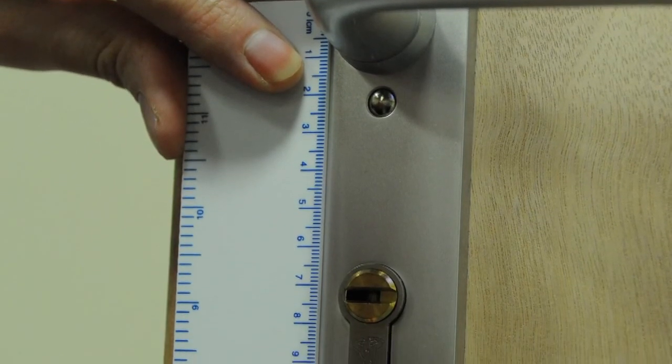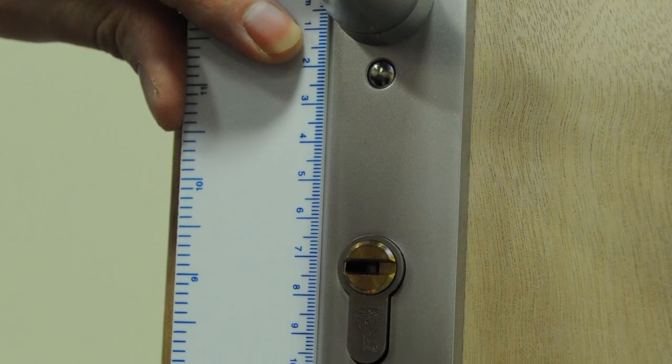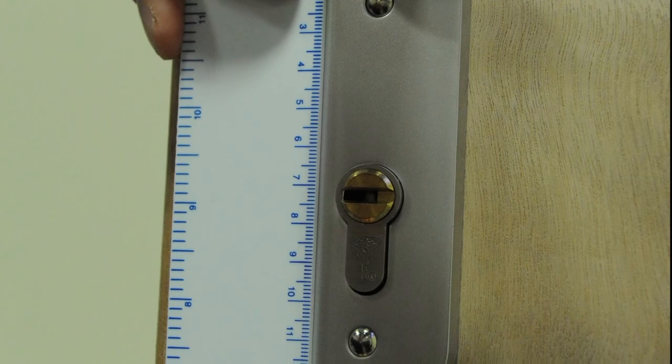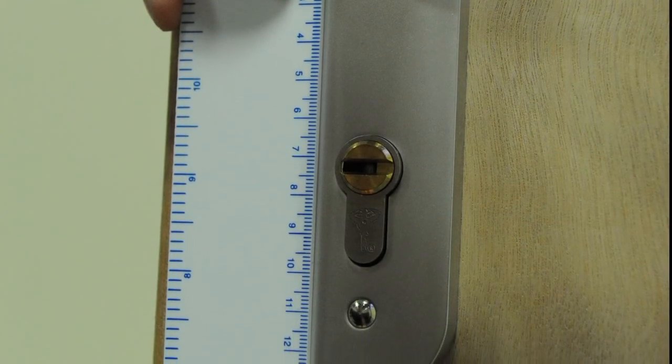Please note that the external handle set has a thickness of 10mm and the internal handle set has a thickness of 20mm. These dimensions need to be considered when specifying your cylinder length.